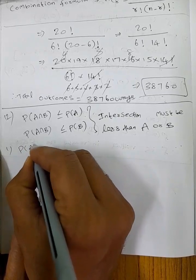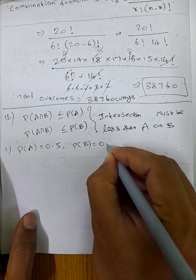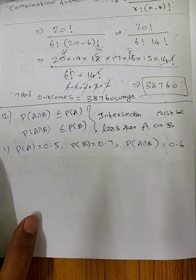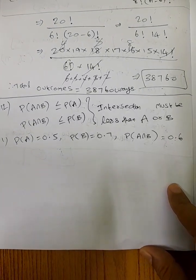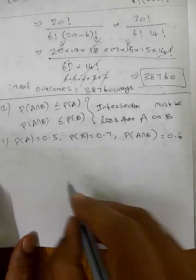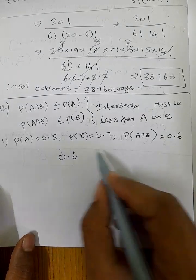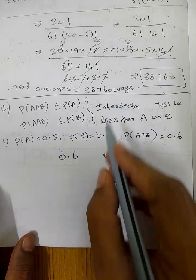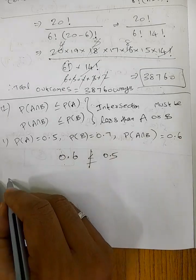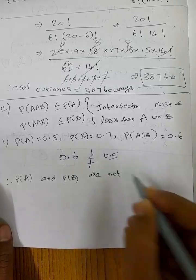For the first example: P(A) is equal to 0.5 and P(B) is equal to 0.7, and P(A∩B) is equal to 0.6. So compare directly: P(A∩B) value is 0.6, and P(A) value is 0.5. So 0.6 is not less than or equal to 0.5. Therefore P(A) and P(B) are not consistent.